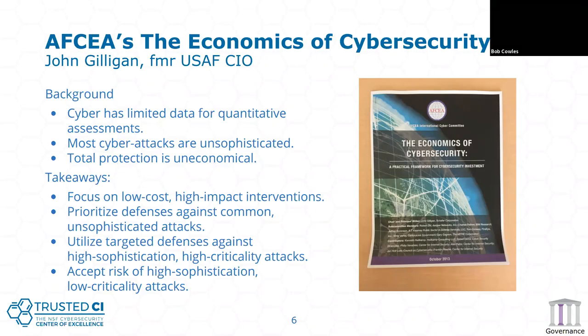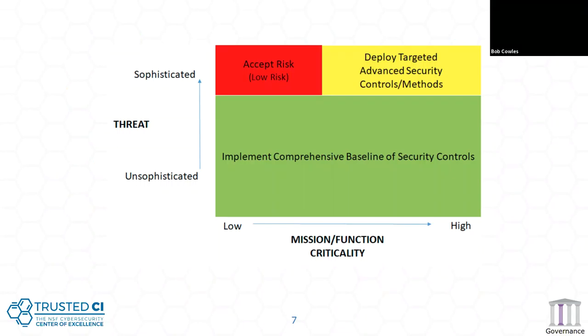Gray pigeons end up being a very big distraction. You utilize targeted defenses against high-sophistication, high-criticality attacks. The high-sophistication, low-criticality attacks you just accept. This chart shows those things: the green area is a baseline of security controls that deal with unsophisticated attacks, the yellow area is where you'd have targeted controls, and the sophisticated low-risk attacks you just have to accept because it costs too much to protect against them.